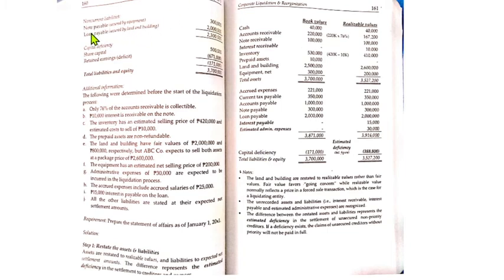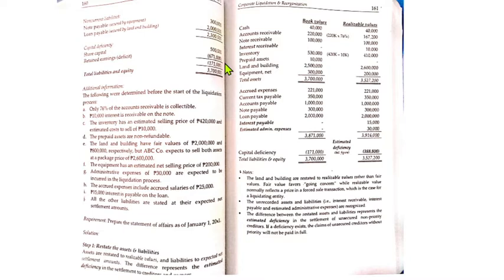The non-current liabilities include note payable secured by equipment and loan payable secured by land. These are secured liabilities, and we will determine later whether each is partially or fully secured based on the realizable value of the securing asset. The equity section shows share capital of 500,000 and a retained deficit of negative 671,000, giving a capital deficiency of negative 171,000. Total liabilities and equity equals 3.7 million.